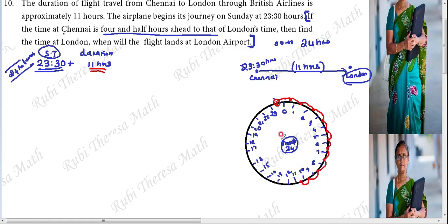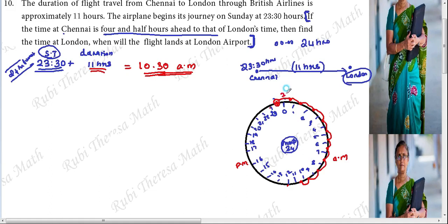23:30 plus 11 hours gives us 34:30. But using the 24-hour clock format, 34:30 mod 24 gives 10:30 AM. So we reach at 10:30 AM — that is the arrival time as per Chennai time.